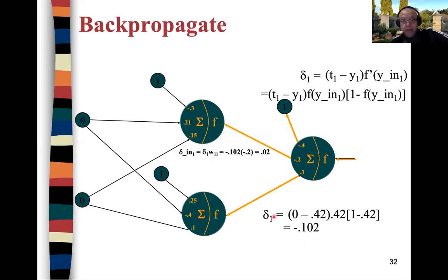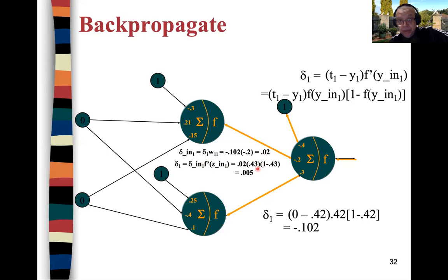The delta_in for node one is this delta multiplied by w11, which is 0 − 0.2. The delta for the hidden node is delta_in multiplied by the derivative of the sigmoid: 0.02 × 0.43 × (1 − 0.43), where 0.43 is the z1 value we computed earlier. This gives delta_1 = 0.005.